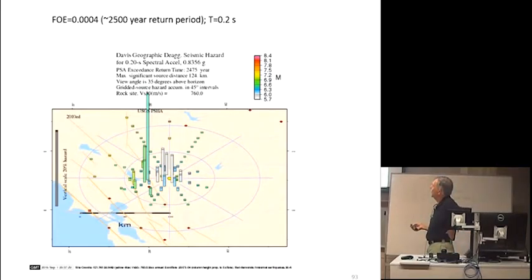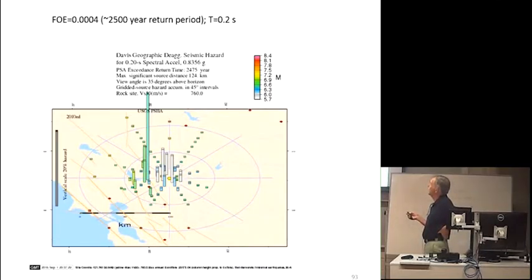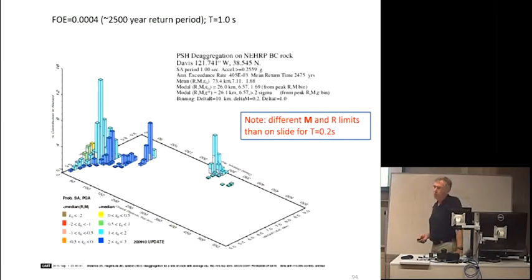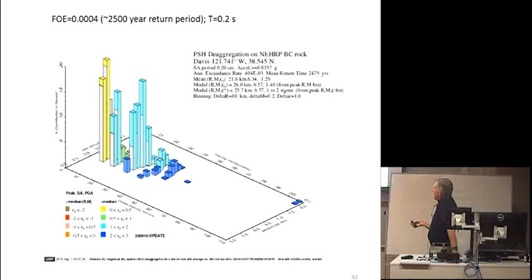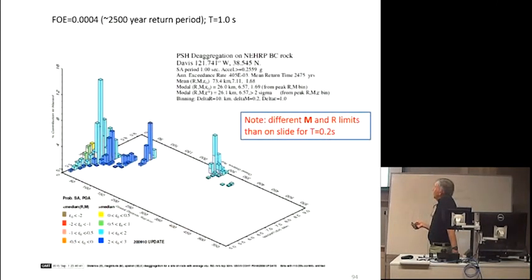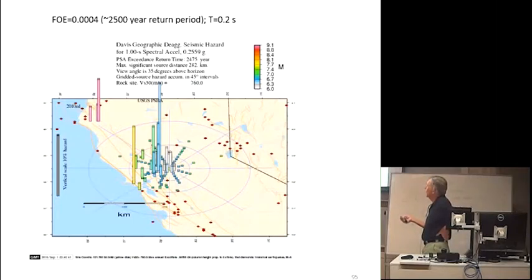At a longer period — 1 second — at Davis, earthquakes over 300 kilometers away now contribute significantly to the hazard. The de-aggregation map shows that the San Andreas Fault and subduction earthquakes off the California coast are now contributing a fair amount. So the controlling earthquake changes dramatically with period, and this has important implications for selecting ground motions for structural design.